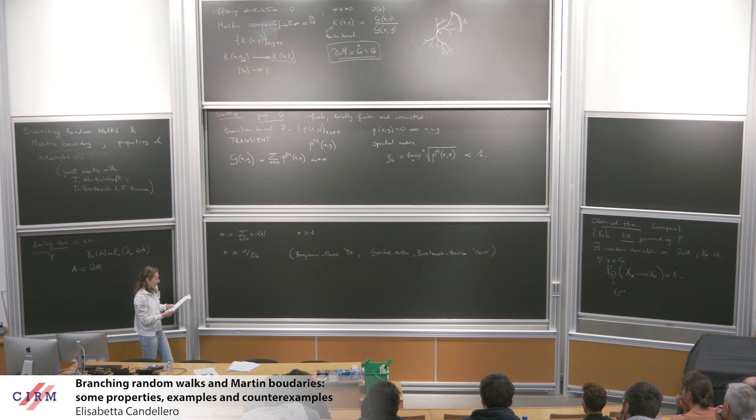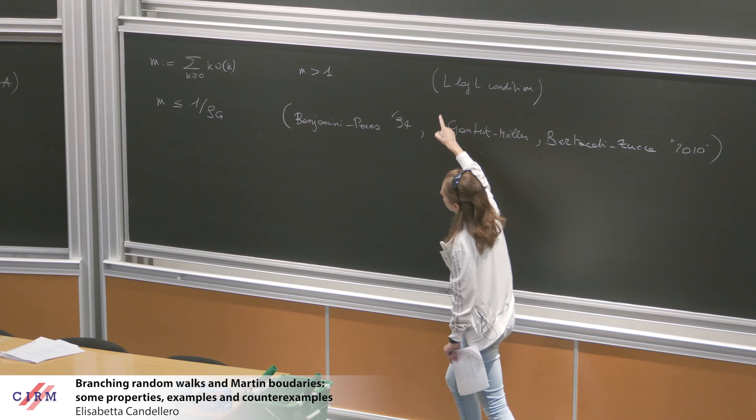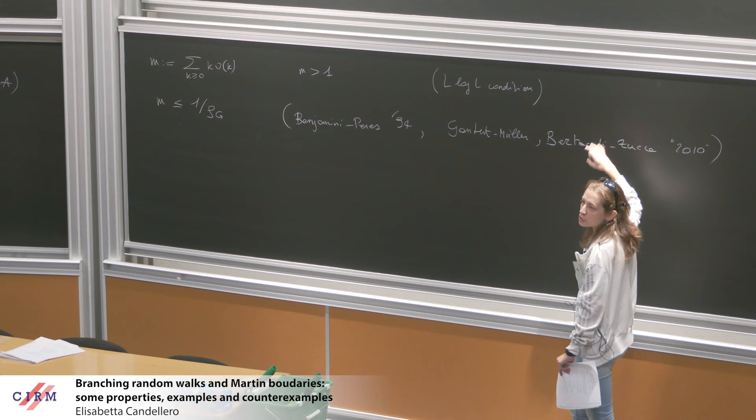This follows from results by Benjamini and Peres for the strict inequality, from around 1994, and for the critical case from results by Gantert and Müller, proven independently also by Bertacchi and Zucca, around 2010. Now I hope it's clear why I need ρ to be smaller than 1: otherwise these two requirements — survival and transience — would not be compatible. I will also need an L log L condition: if L is a random variable distributed as ν, then the expectation of L log L must be finite. This is a technical condition ensuring something I'll say later makes sense.